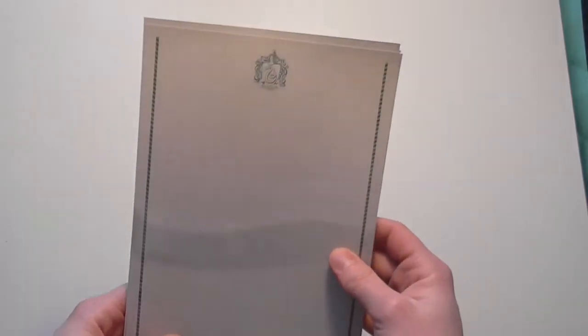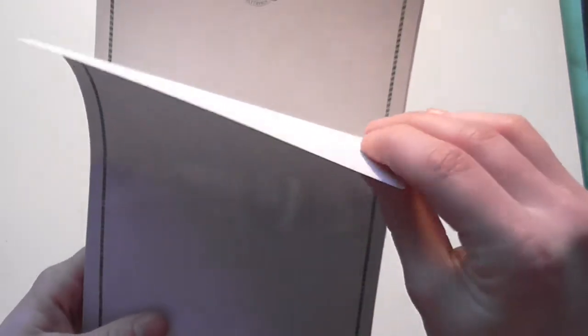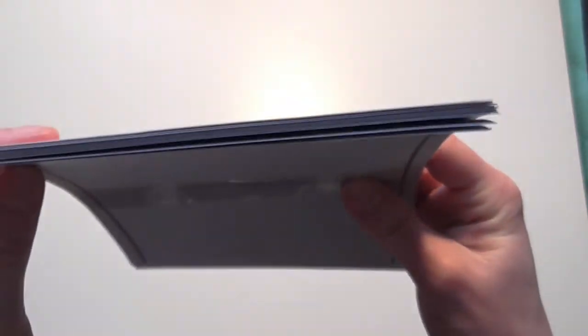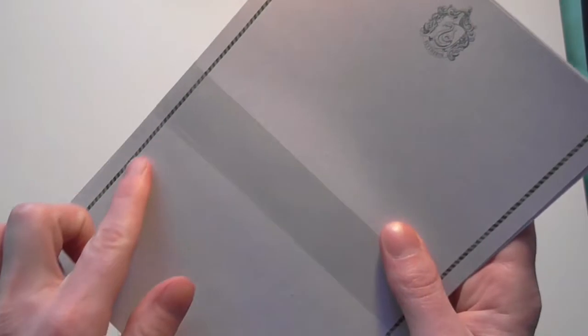Then we have some Slytherin letter paper which is quite thick and pretty nice. There's a lot of pieces so you can write a lot of letters or whatever you want to write. It has the Slytherin symbol at the top and then these green lines down the length of it, so it's pretty neat.